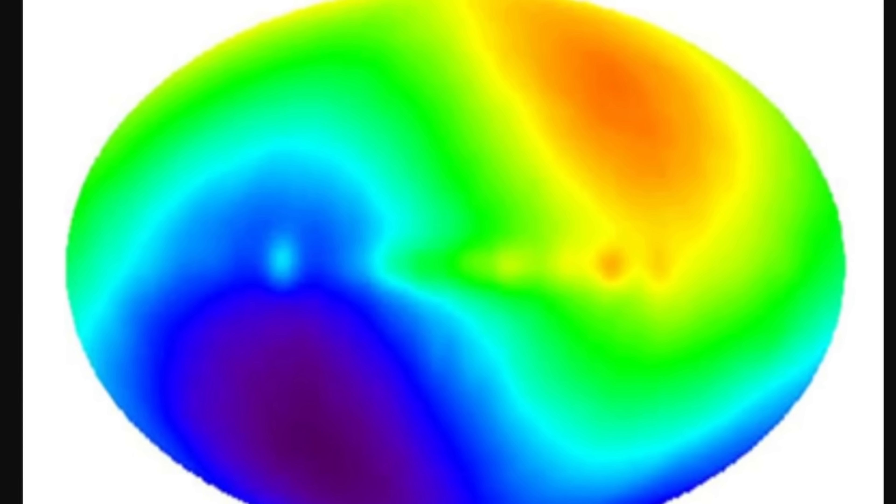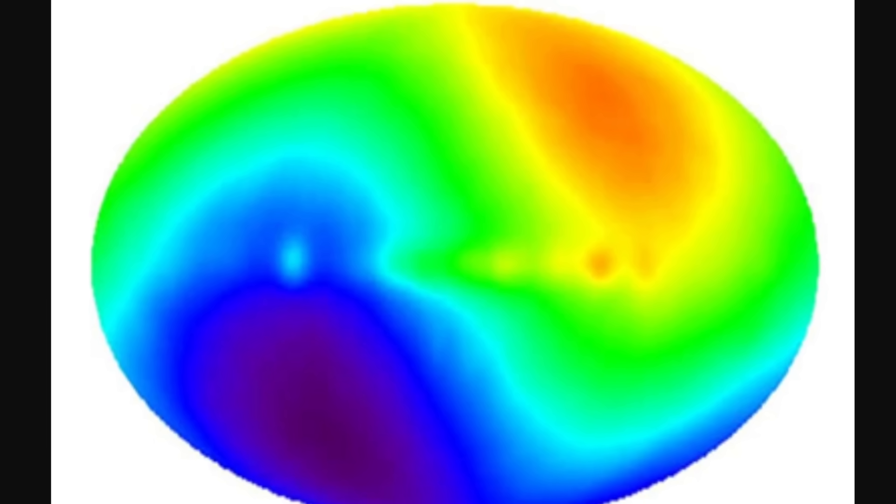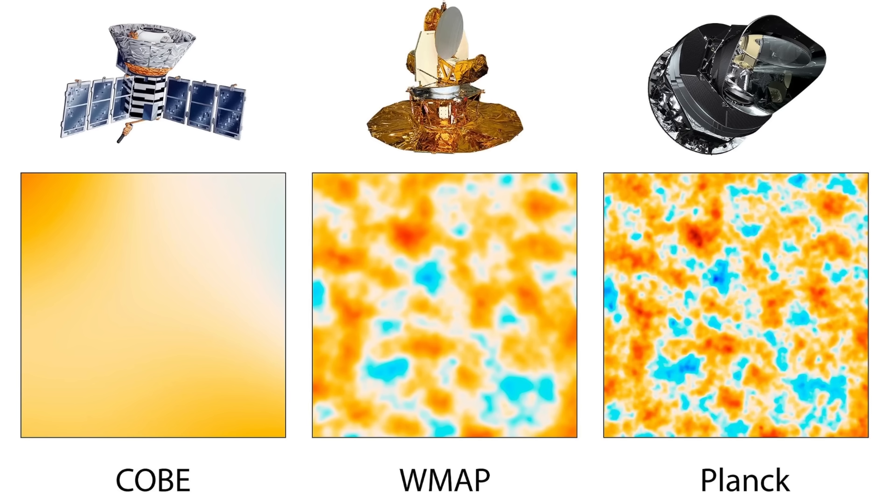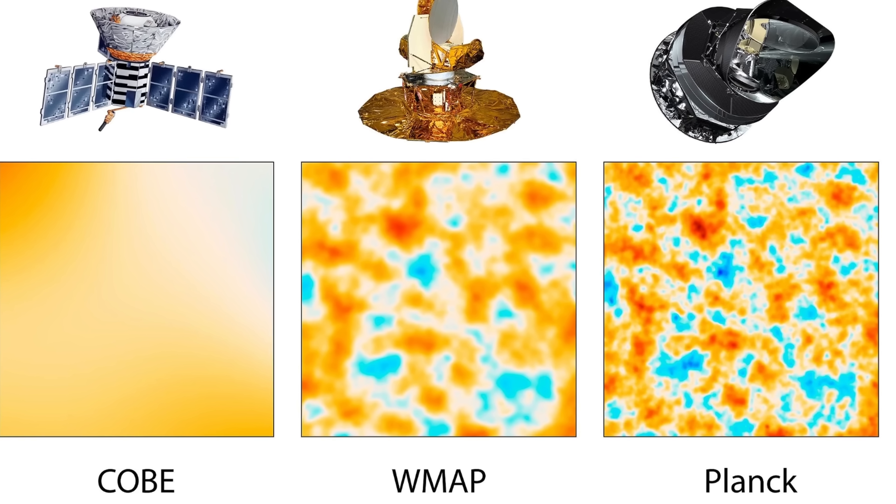To rephrase: we had confirmation that the universe is pretty much the same temperature in every direction, but at the same time the Milky Way galaxy and planet Earth are actually moving pretty fast toward something in the constellation of Centaurus — a result of blue shifting and red shifting. These measurements were super precise, and most of this was actually based on observations from the Planck telescope, which finished its mission just under a decade ago.